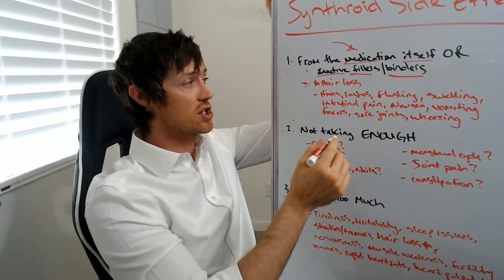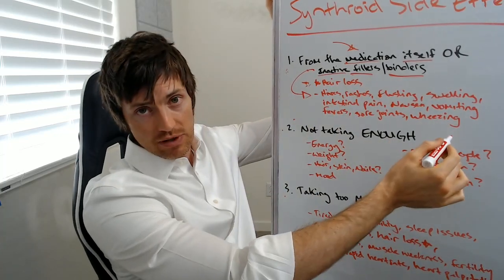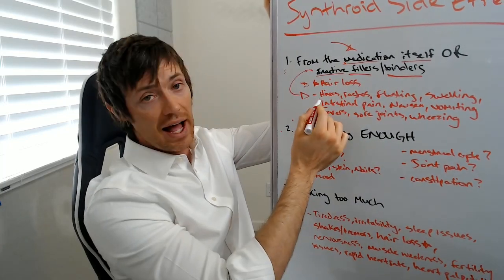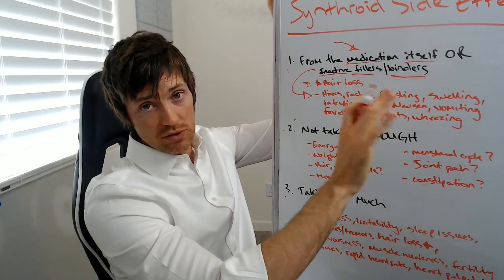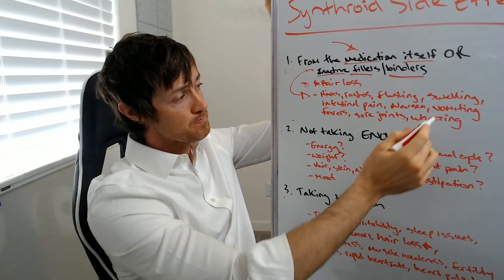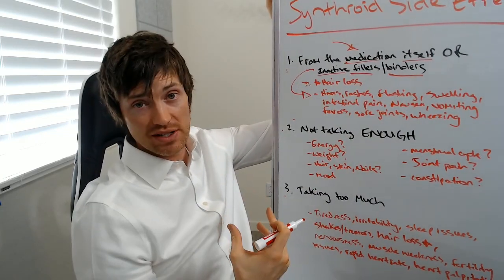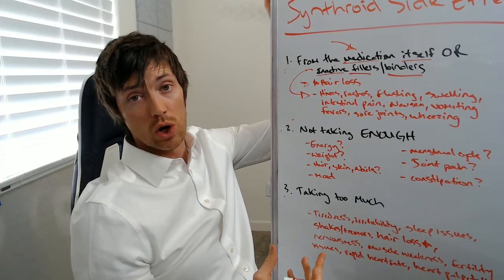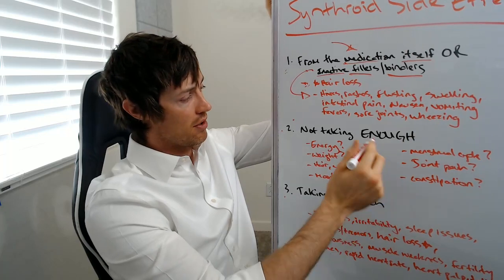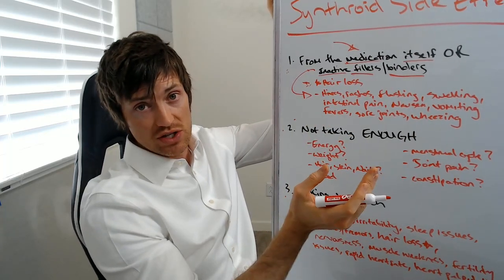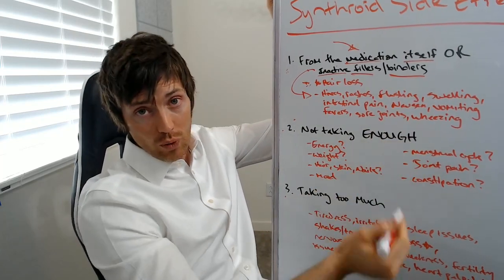So thyroid patients tend to be quite sensitive to things like lactose, corn starch and other binders and fillers, including dyes as well. And if you have a reaction to those inactive ingredients, you tend to experience these types of symptoms. Things like hives, rashes, flushing of the skin, swelling, intestinal pain. You should not have intestinal pain. That's probably a side effect of something like lactose or the corn starch itself. Nausea, vomiting, that's not normal either. Fevers or unexplained fevers. Any medication can cause fevers, including Synthroid. Then we have sore joints and or wheezing.